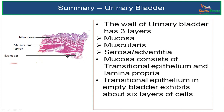Now we have come to the end of this lecture. We will summarize what we have learnt about the microscopic anatomy of urinary bladder. The wall of the urinary bladder has 3 layers from inside outwards: mucosa, muscularis, and serosa or adventitia.